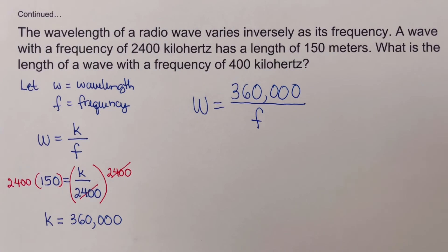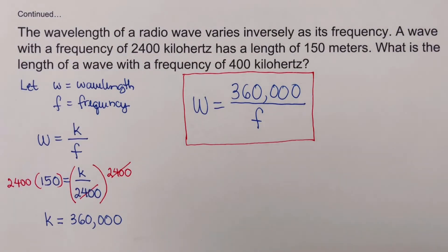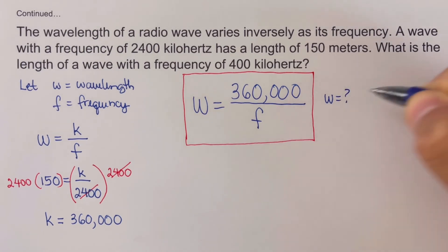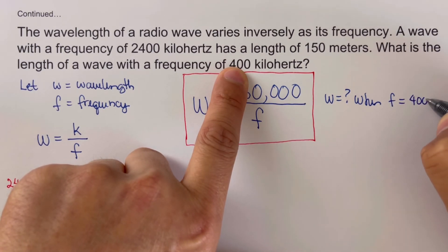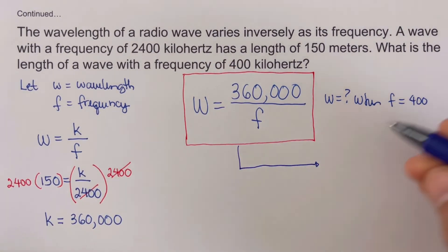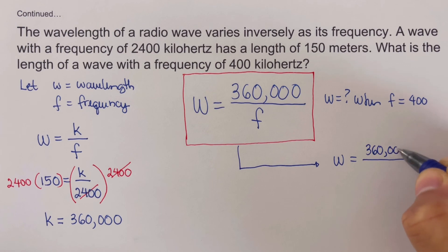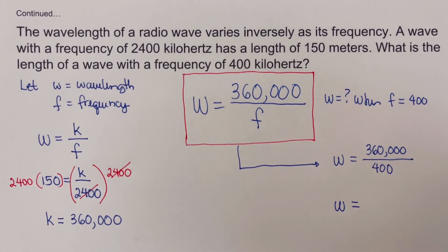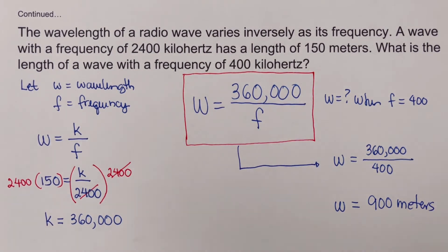Next we determine the wavelength when the frequency is 400. We plug 400 in for f: w equals 360,000 divided by 400. Dividing gives us a wavelength of 900 meters. So the wavelength is 900 meters when the frequency is 400 kilohertz.